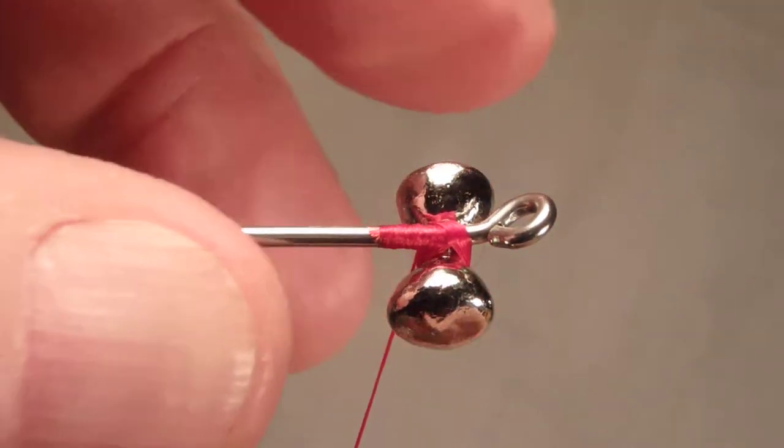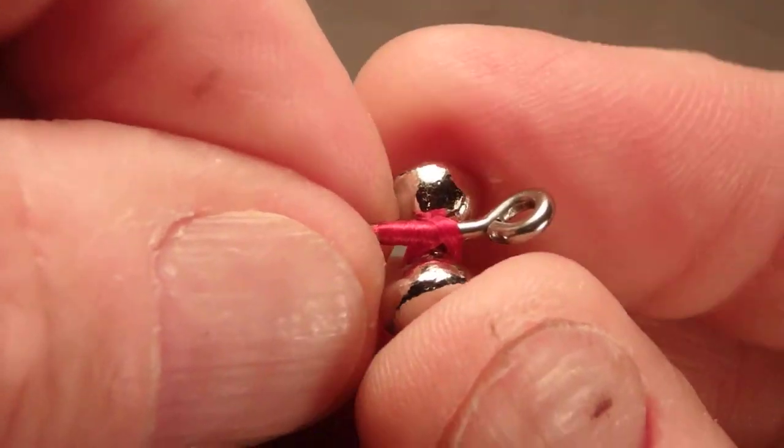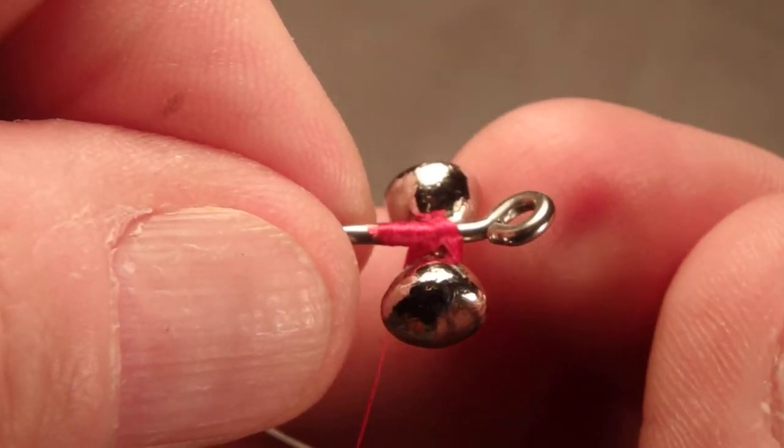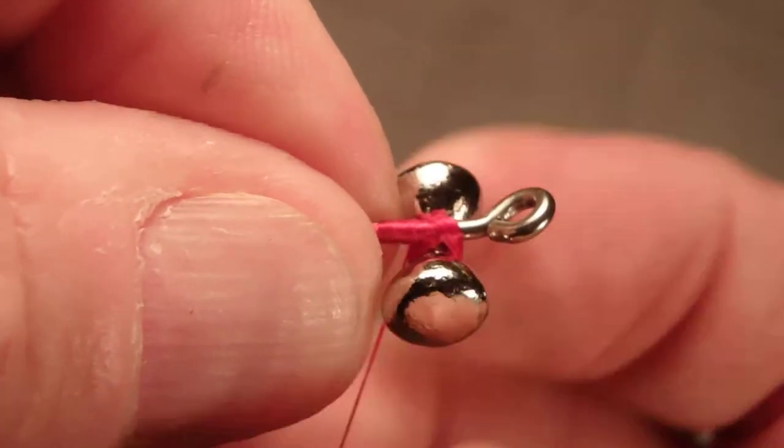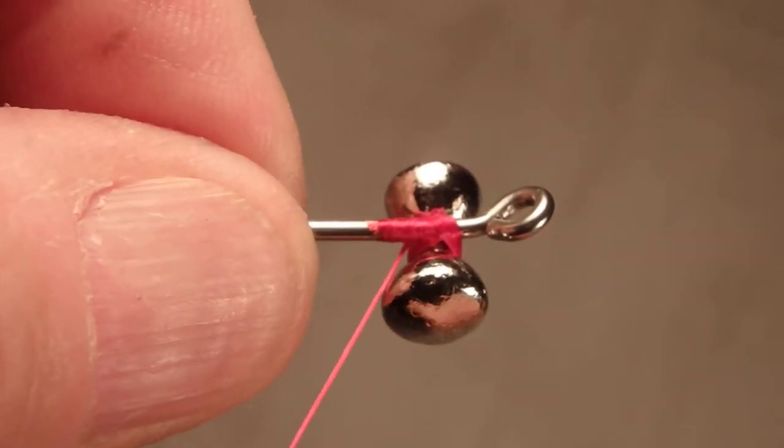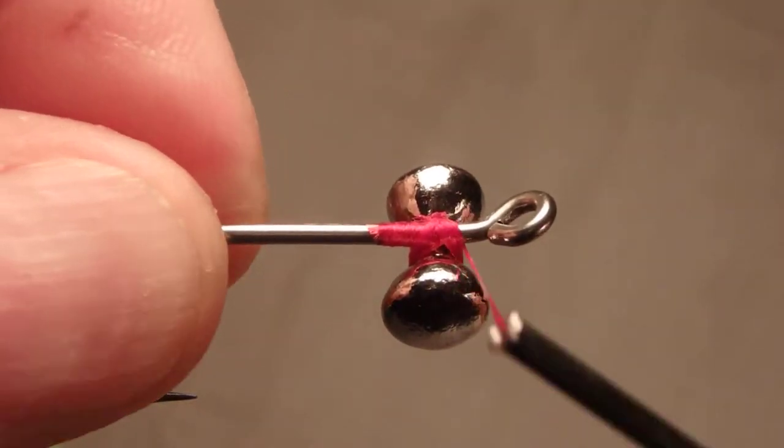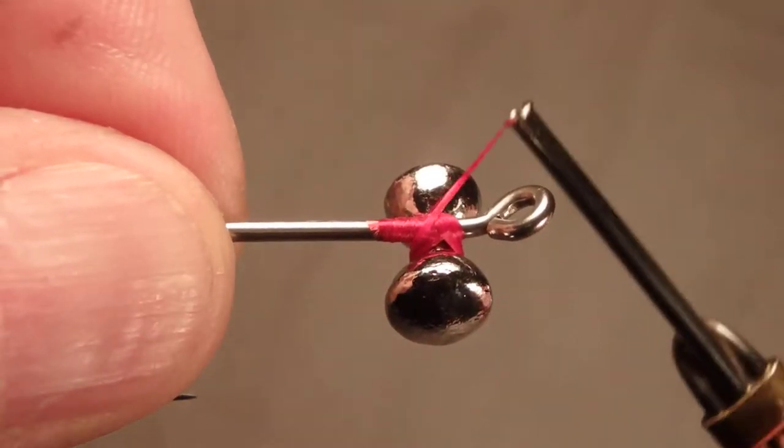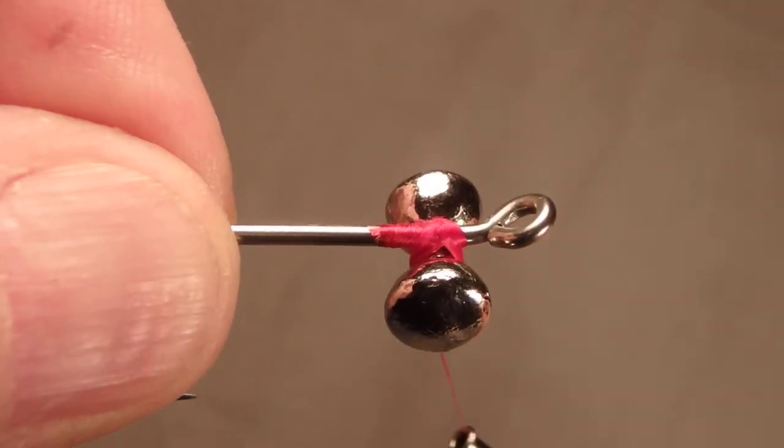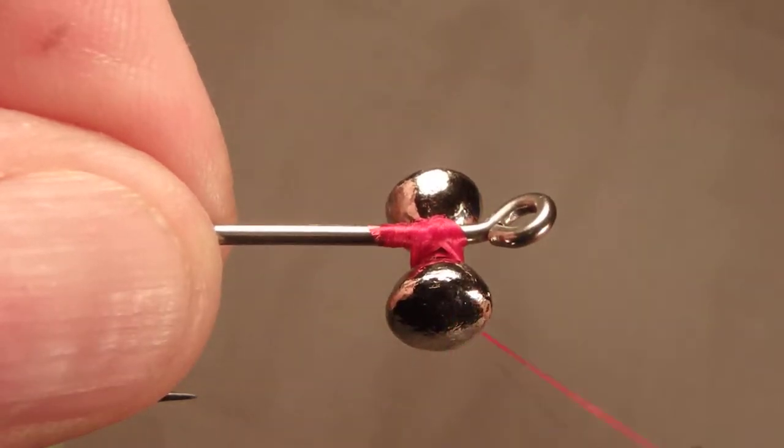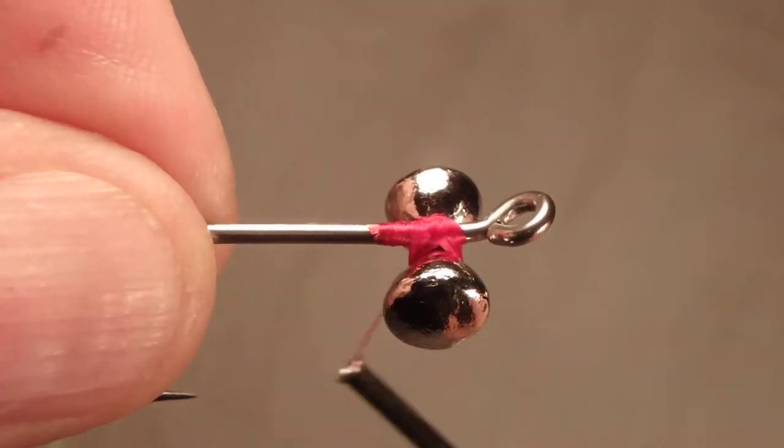Now there are two ways to finish this lashing. Move the eyes where you want. Make sure they are even across the shaft of the hook. There are two lashings. One is the X lash, which just goes X back and forth over and under. However you want to do it. X back and forth. This is great.